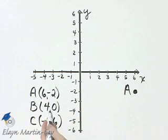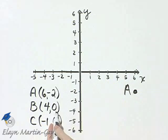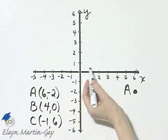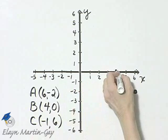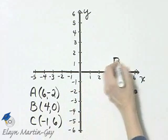Where does point B lie? Start at the origin. That would be 4 units to the right and then 0 units up or down. So start at the origin, 1, 2, 3, 4 units to the right, 0 up or down.